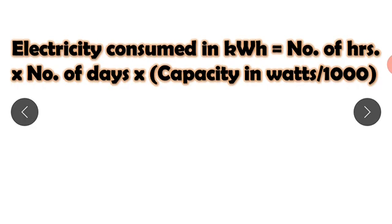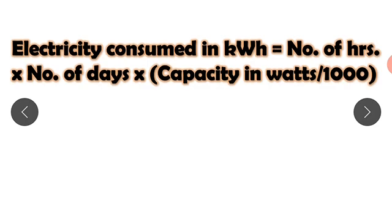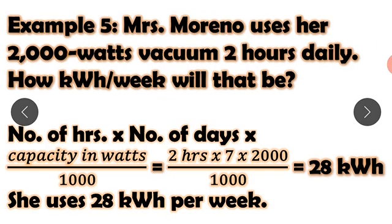To compute electricity consumed in kilowatt-hours, use the formula: number of hours times number of days times capacity in watts, divided by 1,000. For example, Ms. Moreno uses a 2,000-watt vacuum for two hours daily. How many kilowatt-hours per week will that be?